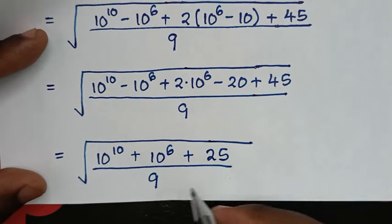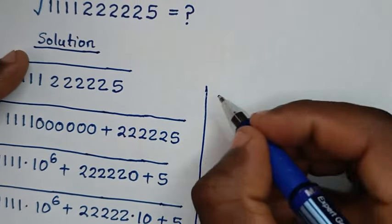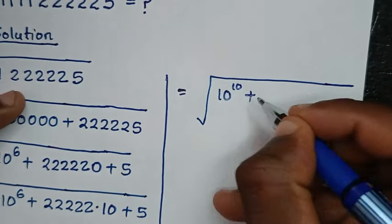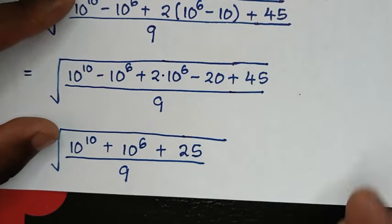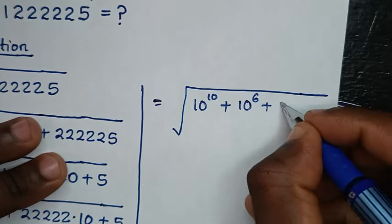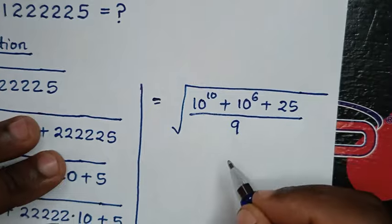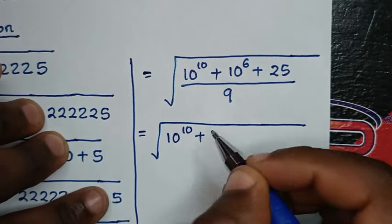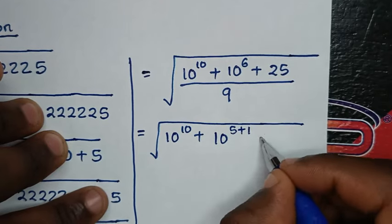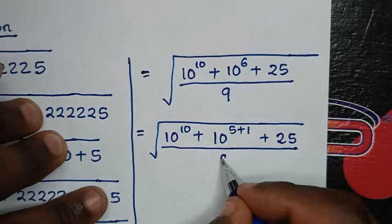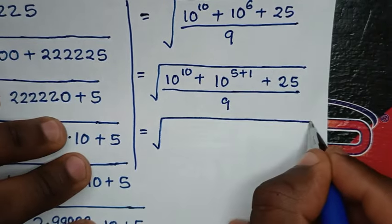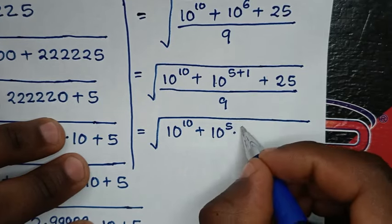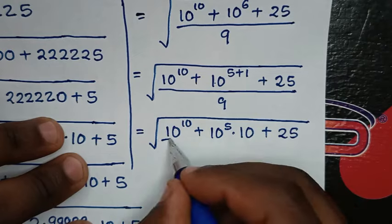Then in the next step, it will be equal to square root of 10 power of 10, plus 10 power of 6 plus 25, over 9. So it will be equal to square root of 10 power of 10 plus 10 power of 6, which is same as 10 power of 5 plus 1, then plus 25 over 9. Then it will be equal to square root of 10 power of 10 plus 10 power of 5 plus 1 — same as 10 power of 5 times 10 power of 1, which is still 10 — then plus 25 over 9.